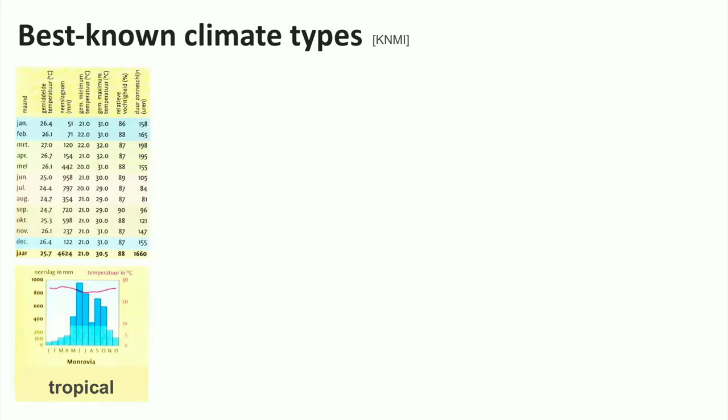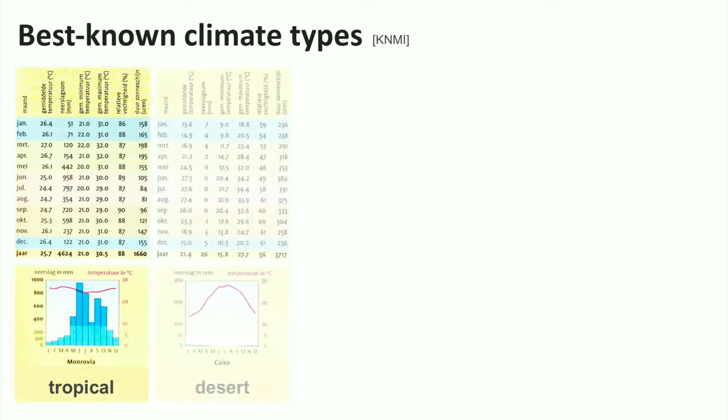What you cannot see is the high average humidity. The next climate is that of a desert, such as in northern Africa. Hardly any rain and a difference between winter and summer.